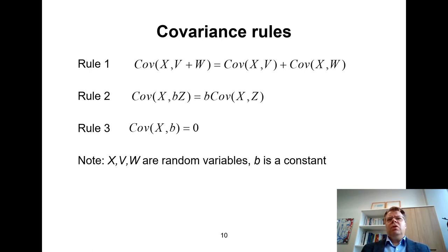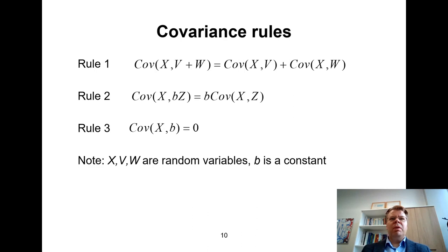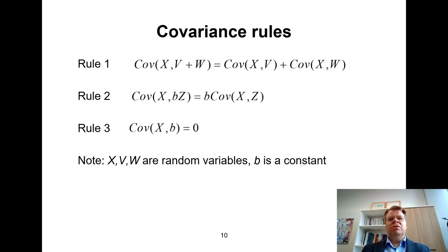The second rule involves two random variables X and Z. If random variable Z is multiplied by some constant B, then we can move this constant B outside the covariance operator, giving B times the covariance of X and Z. This applies to any two random variables. Finally, if we want the covariance of random variable X and some constant B, then by definition the covariance is equal to zero, because B is a constant — it doesn't vary at all. So covariance with a constant goes to zero automatically.